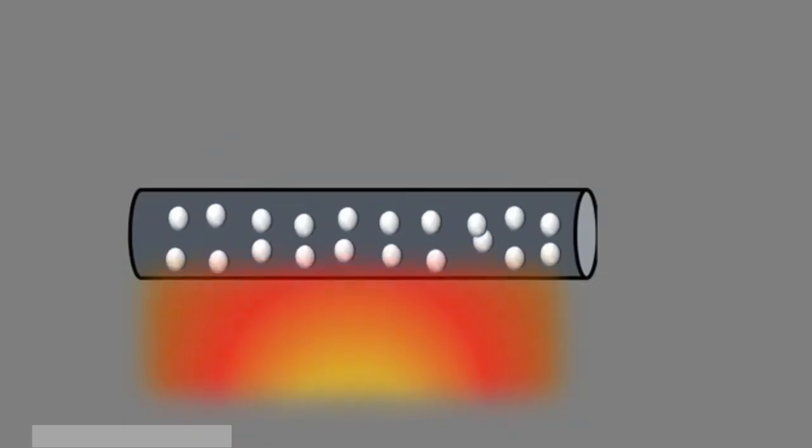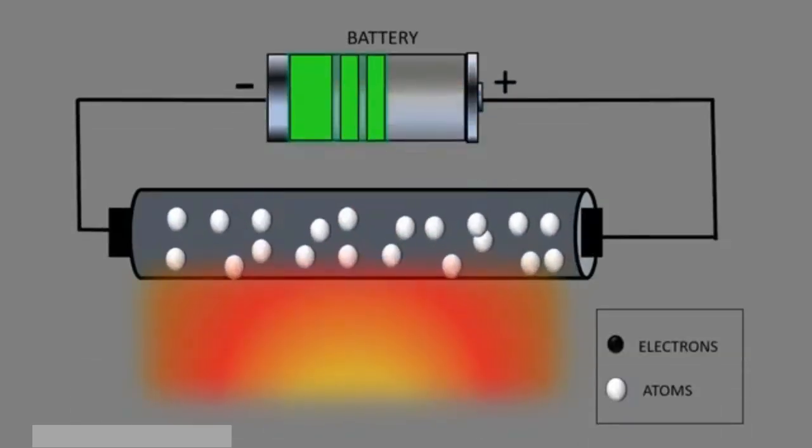It uses a semiconductor material whose resistance changes predictably with temperature. In a common negative temperature coefficient or NTC thermistor, resistance decreases as temperature increases, while in a positive temperature coefficient or PTC type, resistance increases with temperature.